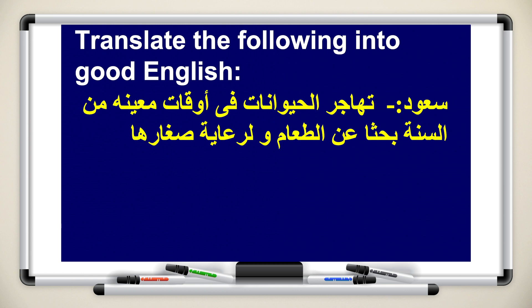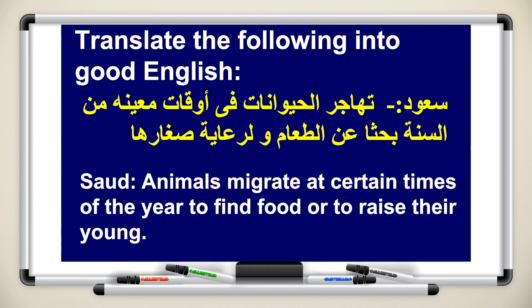Translate the following into good English. So we have an Arabic sentence which we will translate into English. Remember: understand the sentence and don't translate word by word. Animals migrate at certain times of the year to find food or to raise their young. This is exactly what the sentence means.